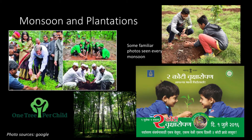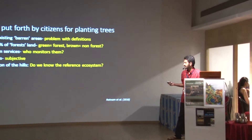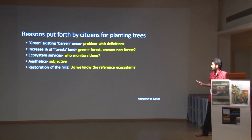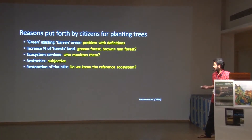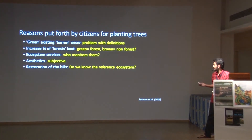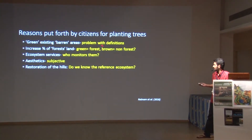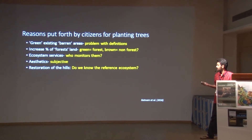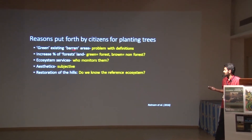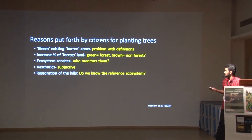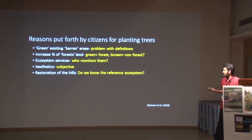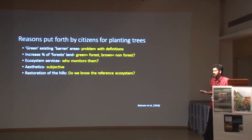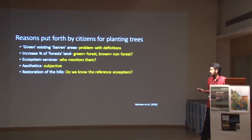Some of the reasons, most of which Priyanka has summarized really well - the ones in white are the reasons and the ones in yellow are my thoughts on them. One of the chief things is: why are we going wrong in defining green and barren? This is a major problem.